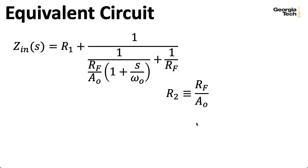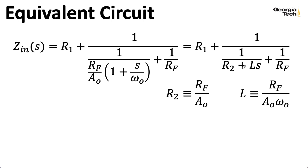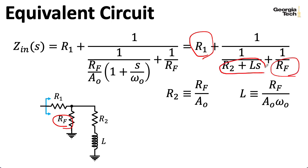Okay, that ends the new content. And now we'll return to the original video material. So let me define a resistance R2 as RF over A₀. So that corresponds with this spot here. So let me define an inductance L as RF over A₀ times ω₀. So that corresponds with this here. So I can rewrite our impedance as R1 plus 1 over [1 over R2 plus LS] plus 1 over RF. And this expression lets me express our input impedance as an equivalent circuit. So I have R1 in series with a parallel combination of RF, that's this here, with R2 plus LS. So that's a series combination of R2 and this inductance L.